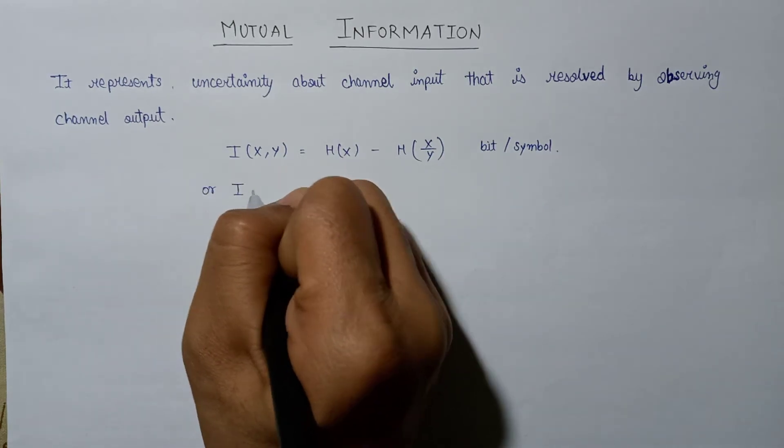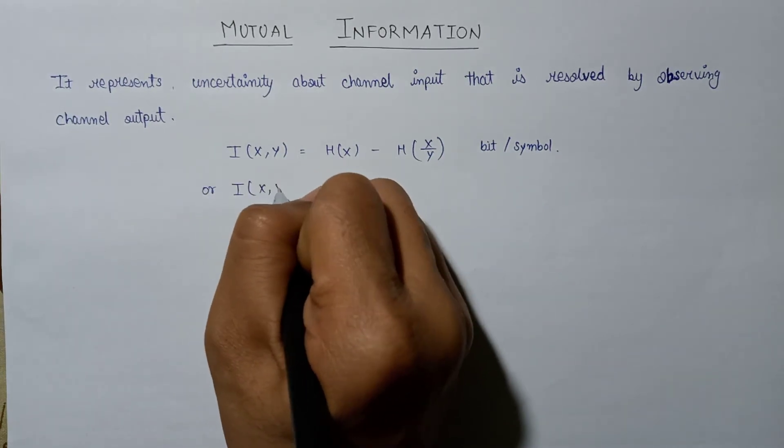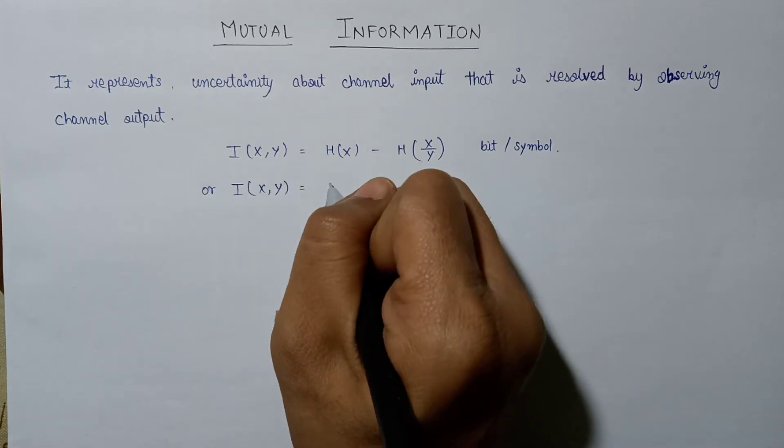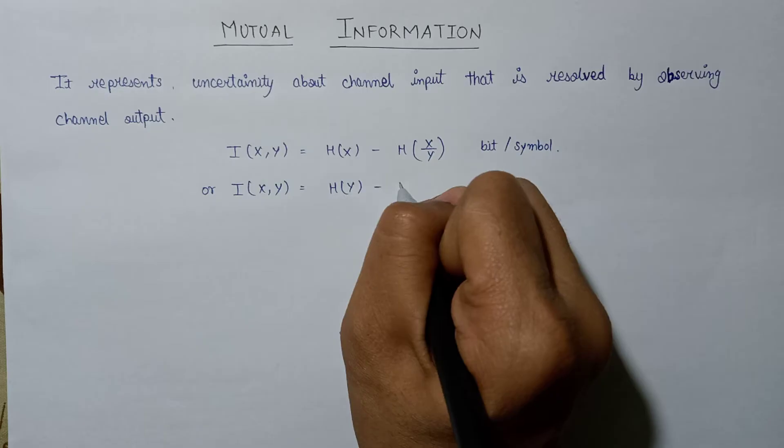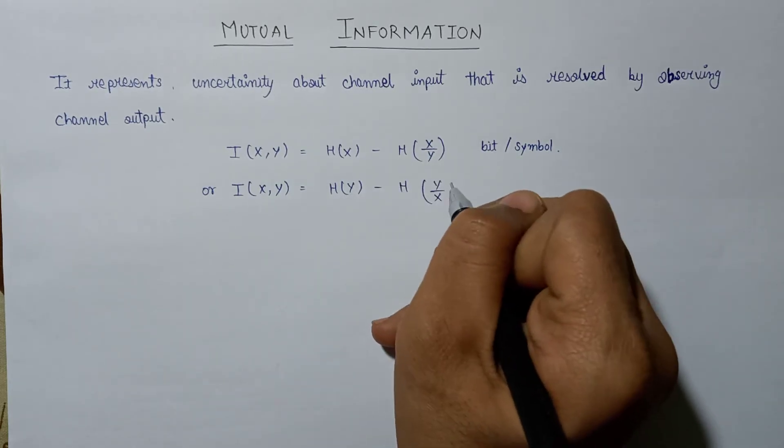Similarly, I(x,y) can also be represented as H(y) minus H(y|x), bits per symbol.